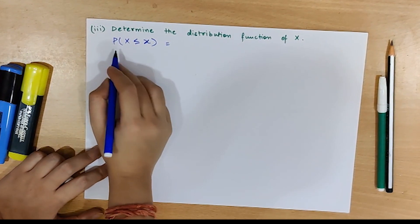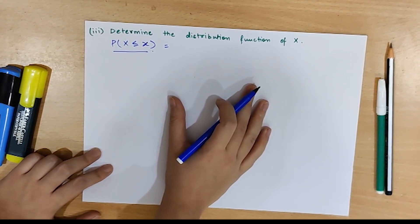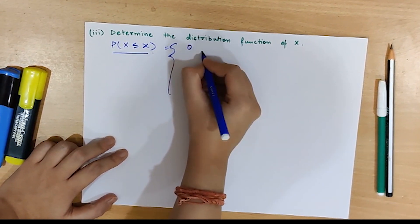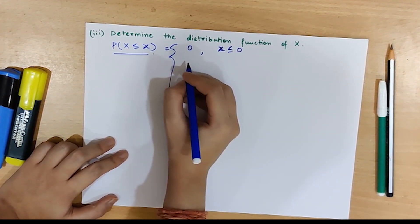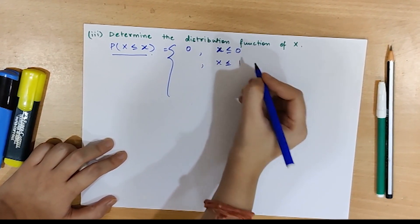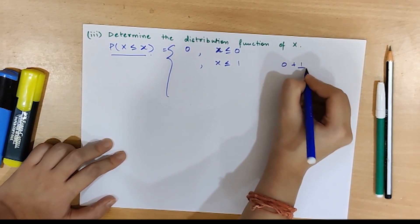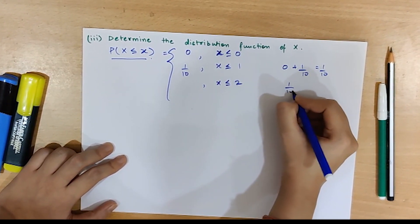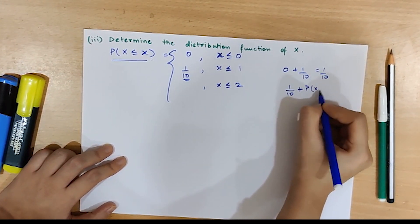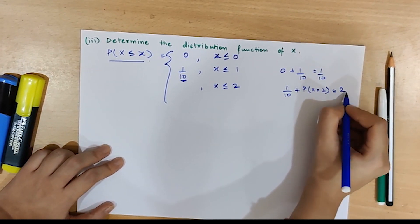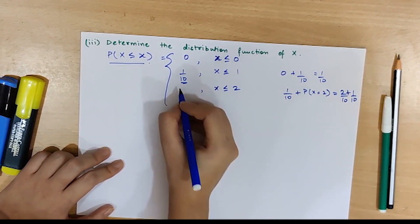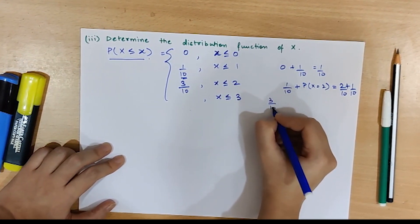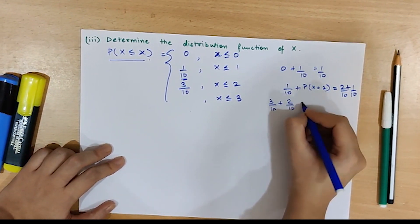Now determining the distribution function of x, which is P(X ≤ x) for different values of x. For x ≤ 0, probability is 0. For x ≤ 1, we have 0 + 1/10 = 1/10. For x ≤ 2, that is 1/10 plus P(x = 2) = 2/10, giving 3/10. For x ≤ 3, we have 3/10 + 2/10 = 1/2.